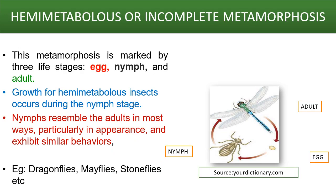Let us see hemimetabolous or incomplete metamorphosis. This metamorphosis is marked by three life stages: the egg, the nymph, and the adult. Growth for hemimetabolous insects occurs during the nymph stage. These nymphs resemble the adult in most ways, particularly in appearance, and exhibit similar behaviours. We can see incomplete metamorphosis in dragonflies, mayflies, stoneflies, etc.